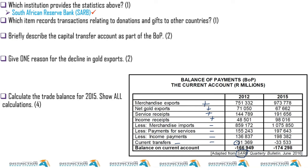Which item records transactions relating to gifts and donations? That would be current transfers — I just finished explaining that.